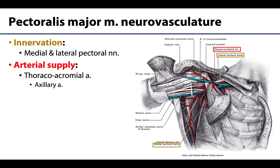Now let's discuss the neurovascular supply of pectoralis major. Both the lateral and medial pectoral nerves will provide efferent and afferent innervation for this muscle. You can see the lateral pectoral nerve here, and the medial pectoral nerve here, piercing through pec minor. Usually just one nerve innervates a muscle, but with a larger muscle like pectoralis major, there may be two. Both of these nerves originate from the brachial plexus — much more on that in upcoming blocks.